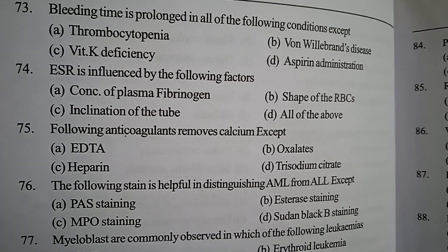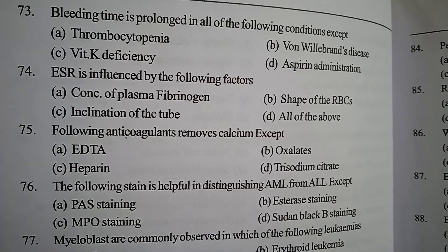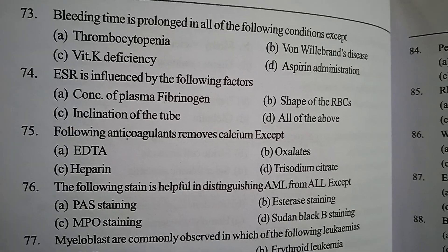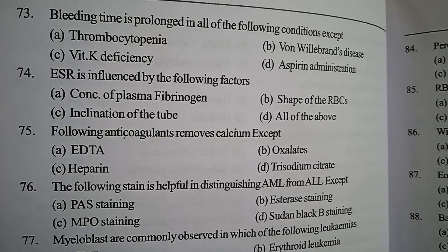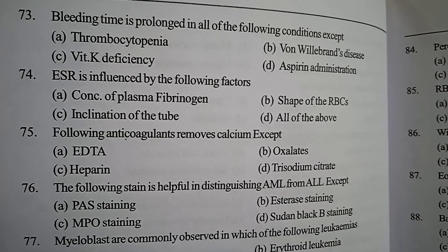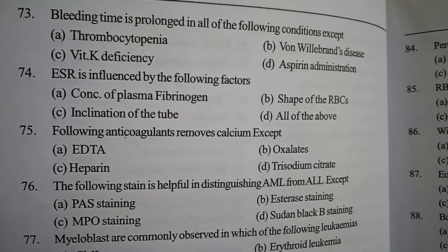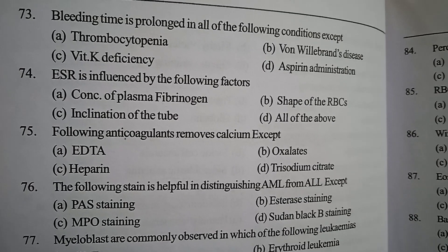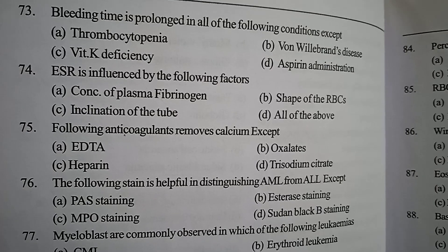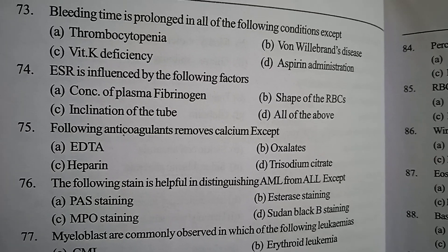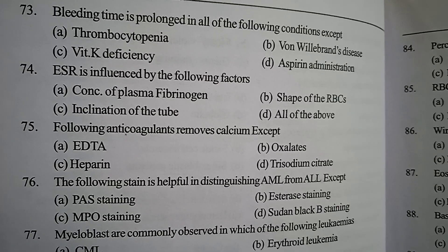Next one: ESR is influenced by the following factors. Option A: concentration of plasma fibrinogen. Option B: shape of the RBCs. Option C: inclination of the tube. Option D: all of the above. Correct answer: option D, all of the above.